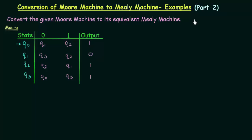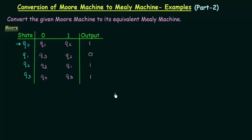In this lecture, we will be seeing another example of conversion of Moore machine to Mealy machine. Here is our question: convert the given Moore machine to its equivalent Mealy machine. The transition table for the Moore machine is given, and our task will be to draw the transition table for the Mealy machine using this transition table. From the transition table of the Mealy machine that we obtain, we will draw the transition diagram for the Mealy machine.